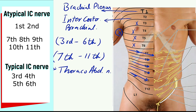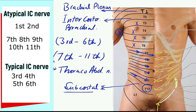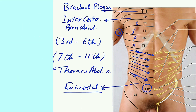The T12 nerve is not an intercostal nerve — it is present beneath the 12th rib and is therefore named the subcostal nerve. The subcostal nerve supplies the abdomen. So this is about the typical and atypical intercostal nerves.